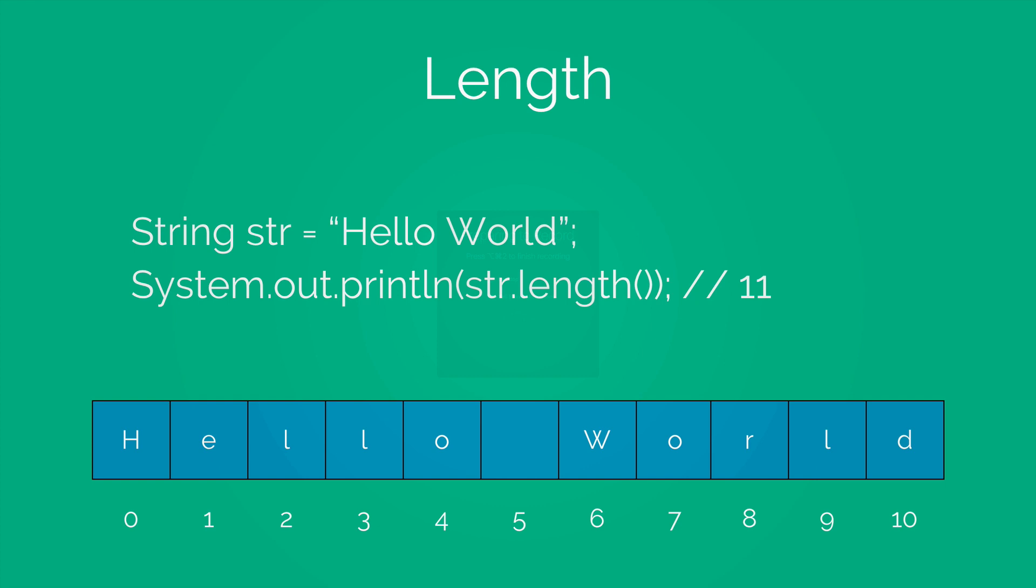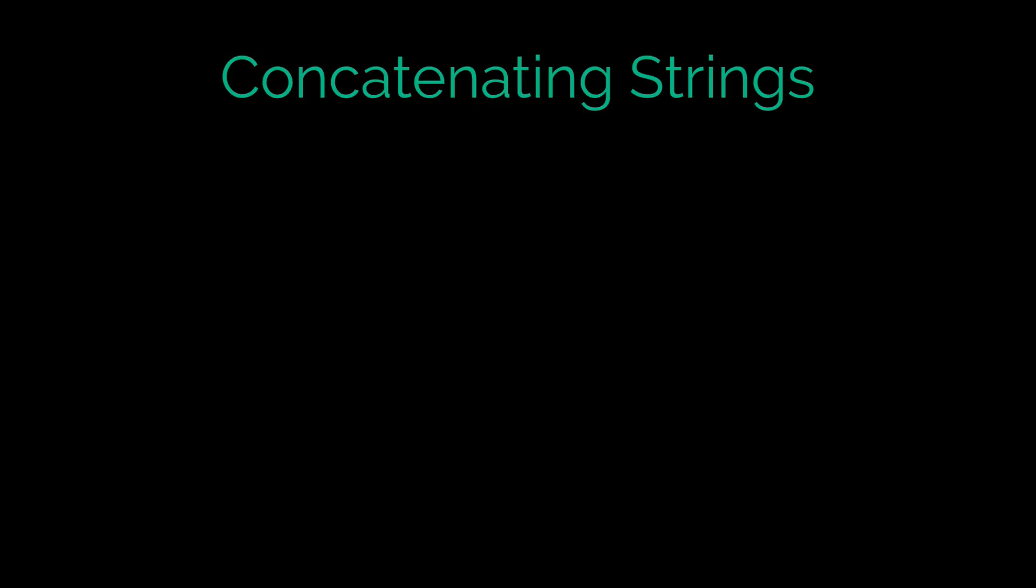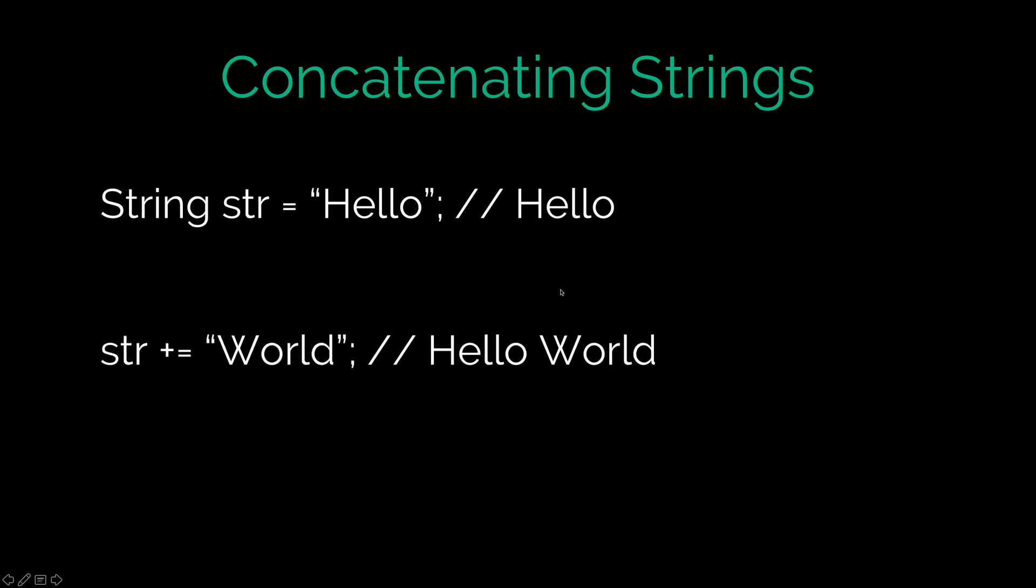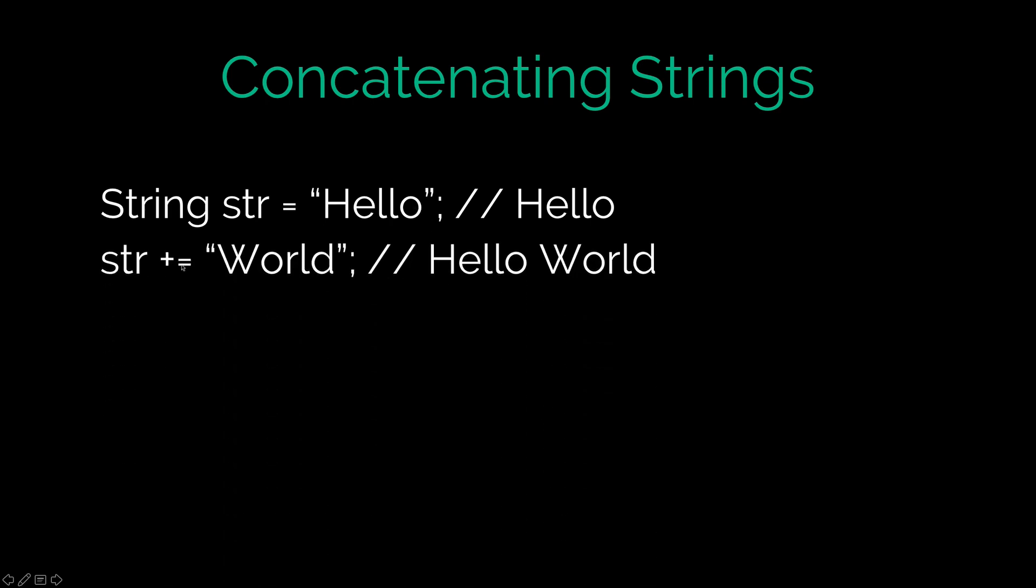Now let's take a look at some of the fun things that we can do with strings. One of them is called concatenating. In simple words it means joining two strings. So I have a text variable here called str. It points to the value hello in memory and now I say str plus equals to world.